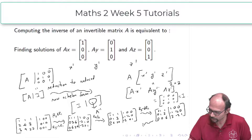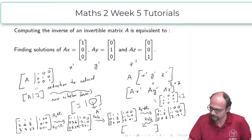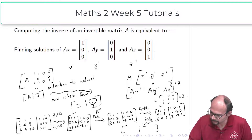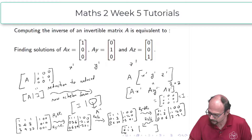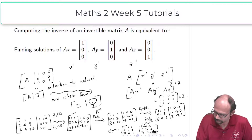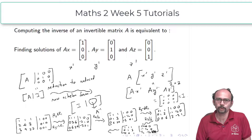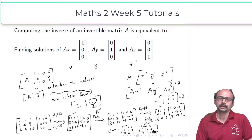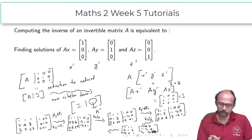I hope you understand what is happening. I want to reduce this further, so I divide R3 by 6. Now I have row echelon form: 1 1 1 / 0 1 3 / 0 0 1. There are two more steps to get reduced row echelon form. Whatever 3 by 3 matrix appears on the right-hand side at the end will be the inverse of the original matrix.